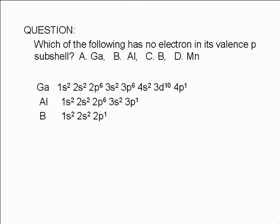And for manganese, it's 1s2, 2s2, 2p6, 3s2, 3p6, 4s2, 3d5. The term valence refers to the outermost shell.